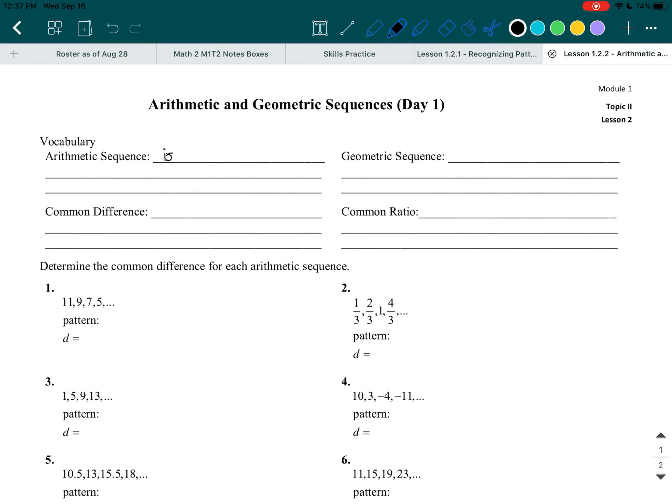Arithmetic Sequence is a sequence of numbers in which the difference between any two consecutive terms is constant. Okay, so almost ran out of space there. If you run out of space, that's okay, just fit it in there as best as you can.